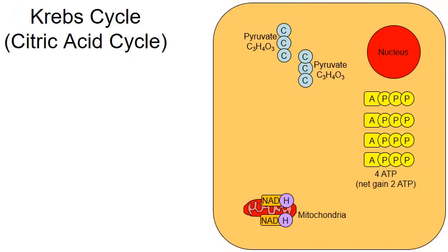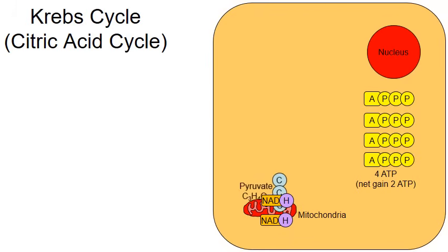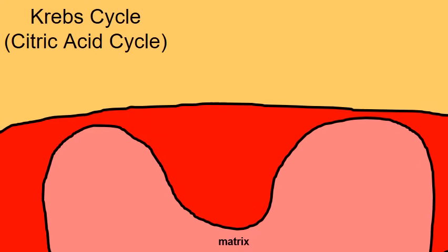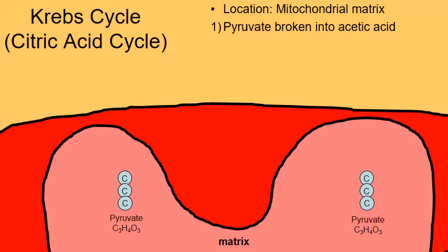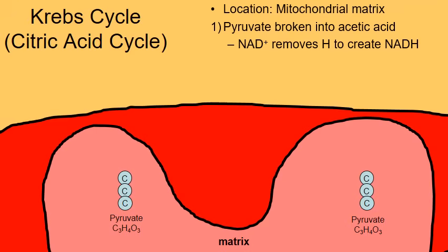Glycolysis has just completed and we're about to start the Krebs cycle. The two molecules of pyruvate migrate into the mitochondria. Zooming into the mitochondrial matrix — the inner fluid layer of the mitochondria — we follow the pyruvate on the left. The same thing happens to the right pyruvate, but we'll focus on the left one. The pyruvate is broken down into acetic acid.